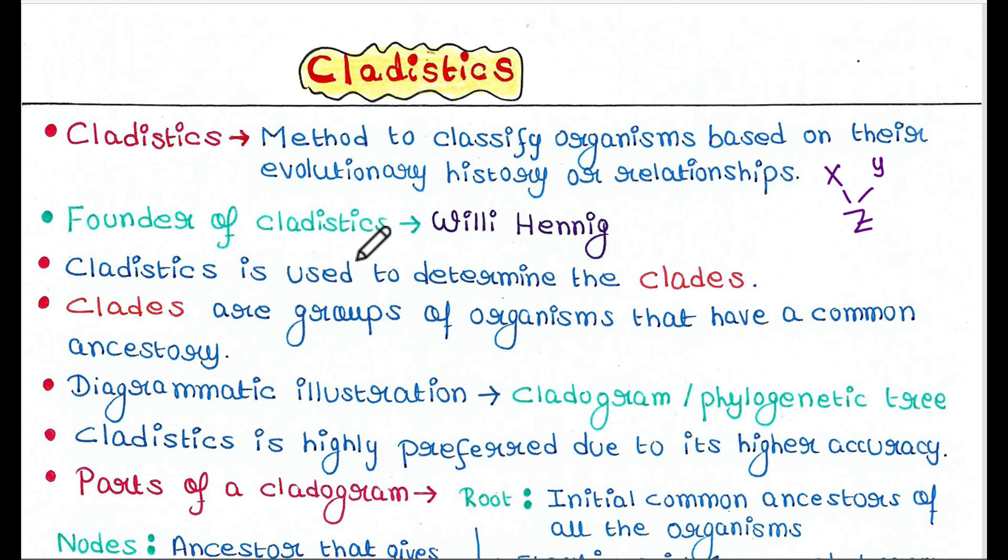Founder of cladistics was Willi Hennig. Cladistics is used to determine the clades. So what are clades? Clades are groups of organisms that have a common ancestry. So here, X and Y have common ancestor Z. That means X and Y are clades.